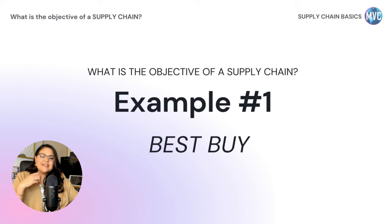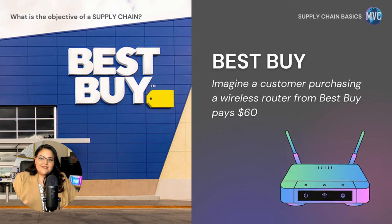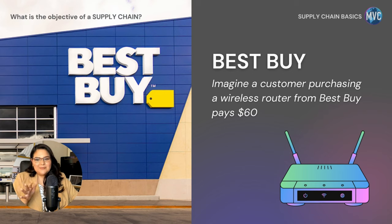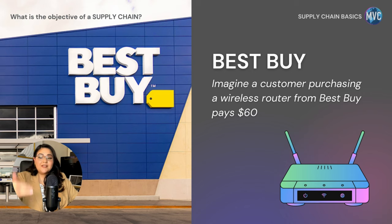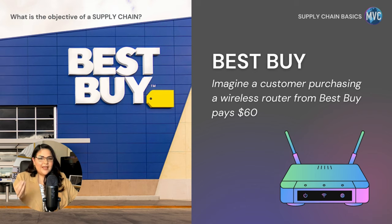To illustrate this with a real-world example, imagine a customer purchasing a wireless router from Best Buy for $60. That $60 represents the revenue that the supply chain receives at the point where the customer walks in and makes the purchase. The customer who buys the router clearly values it at or above $60, so part of the supply chain surplus is left with the customer as consumer surplus.